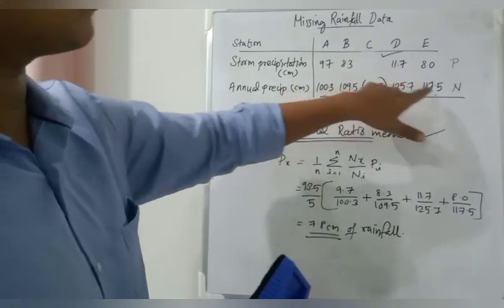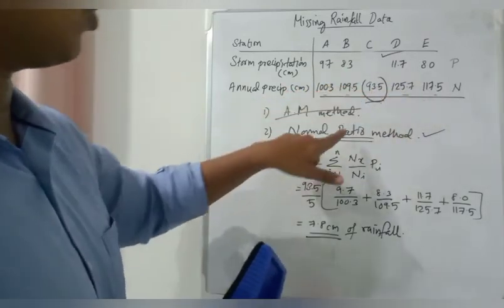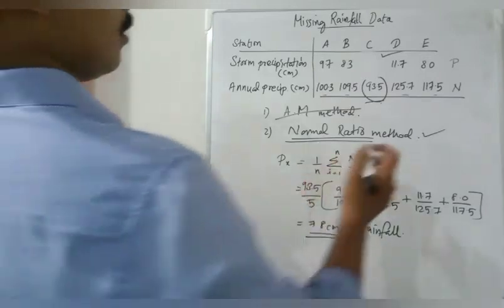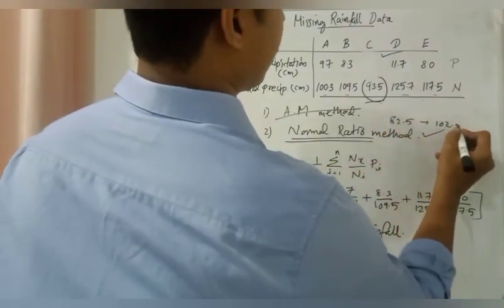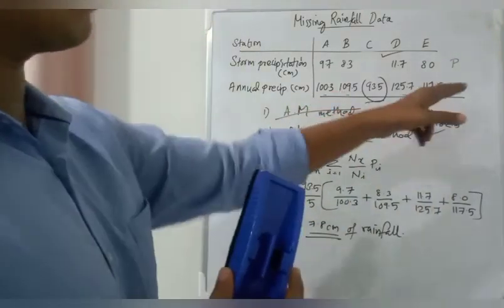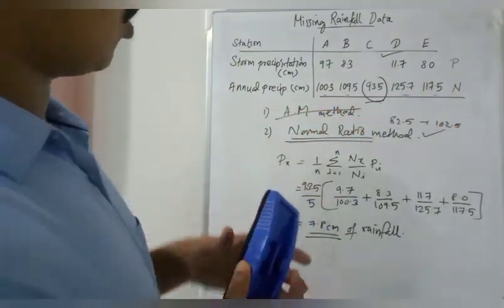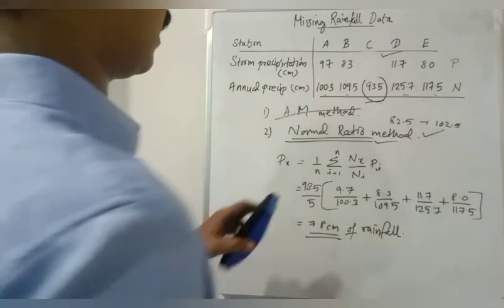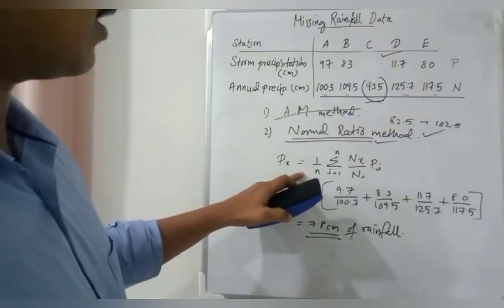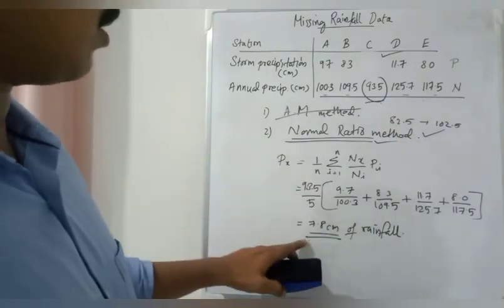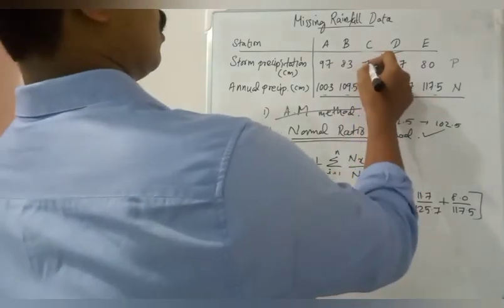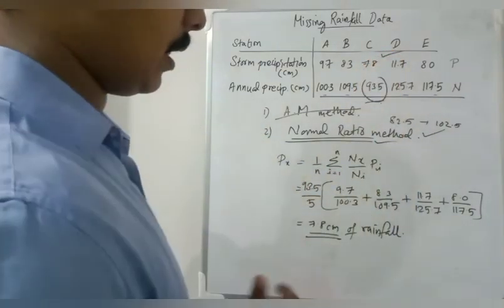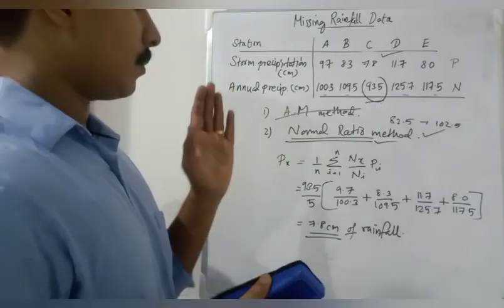As three values were exceeding that range of 84.15 to 102.85, we chose normal ratio method. By substituting in this equation, we got Px as 7.8 as our value. So I hope you understand.